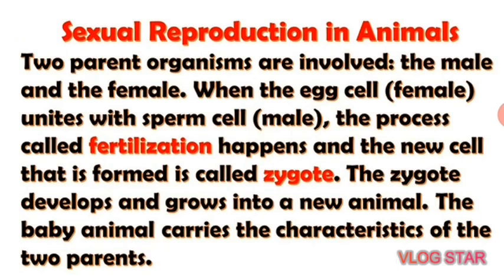Next is sexual reproduction in animals. In sexual reproduction, two parent organisms are involved — both male and female. When the egg cell unites with the sperm cell, the process called fertilization occurs, and the new cell formed is called a zygote. The zygote develops and grows into a new animal that carries the characteristics of both the female and male parents.